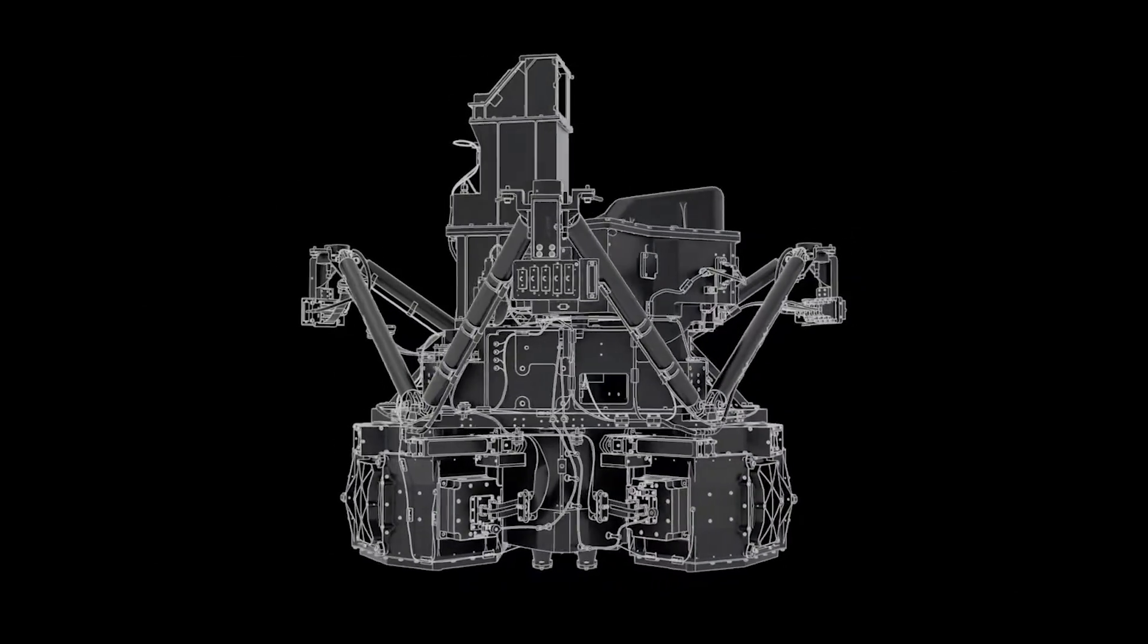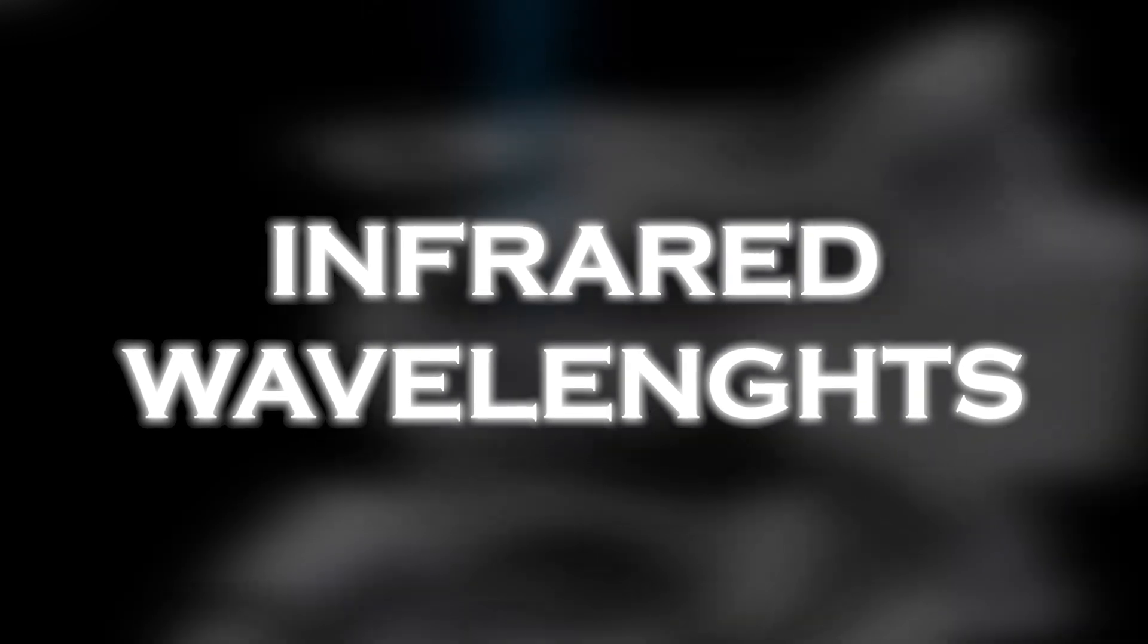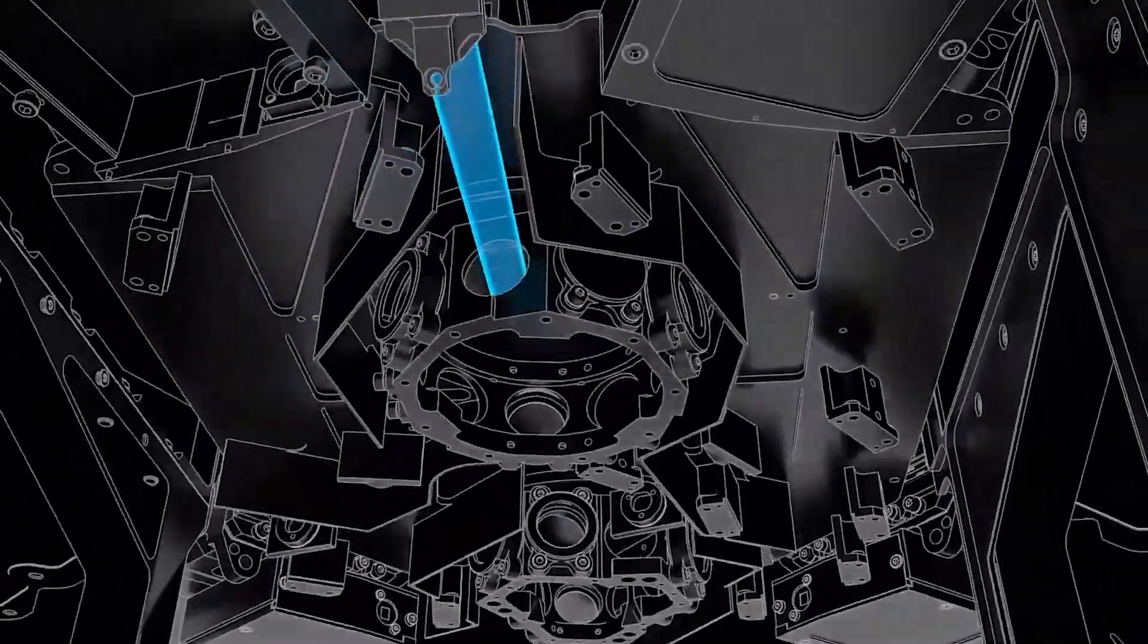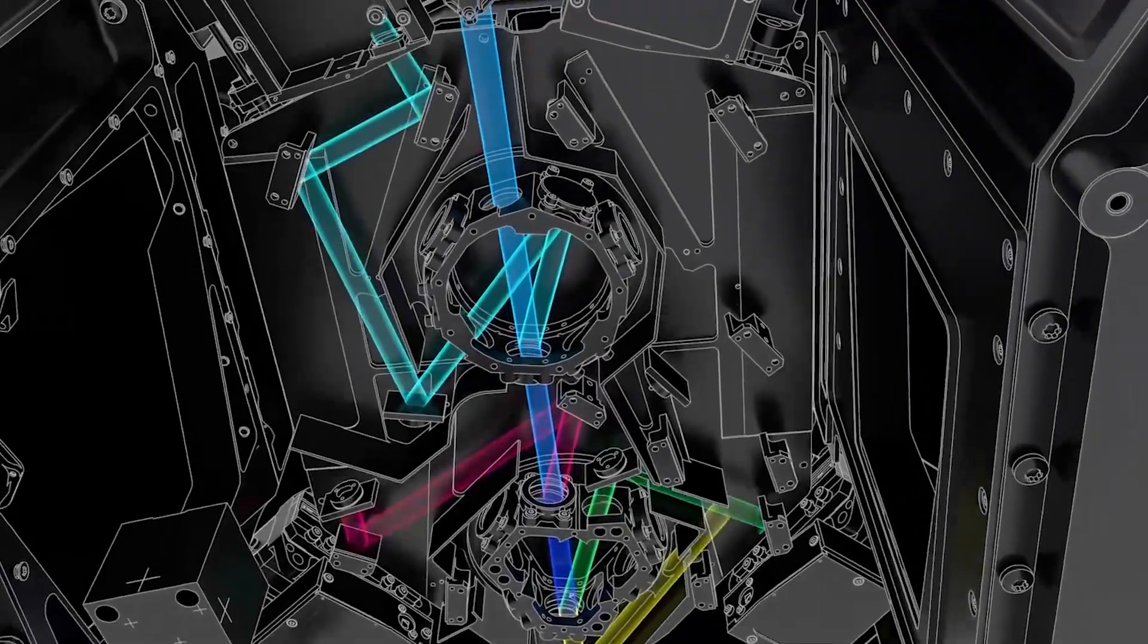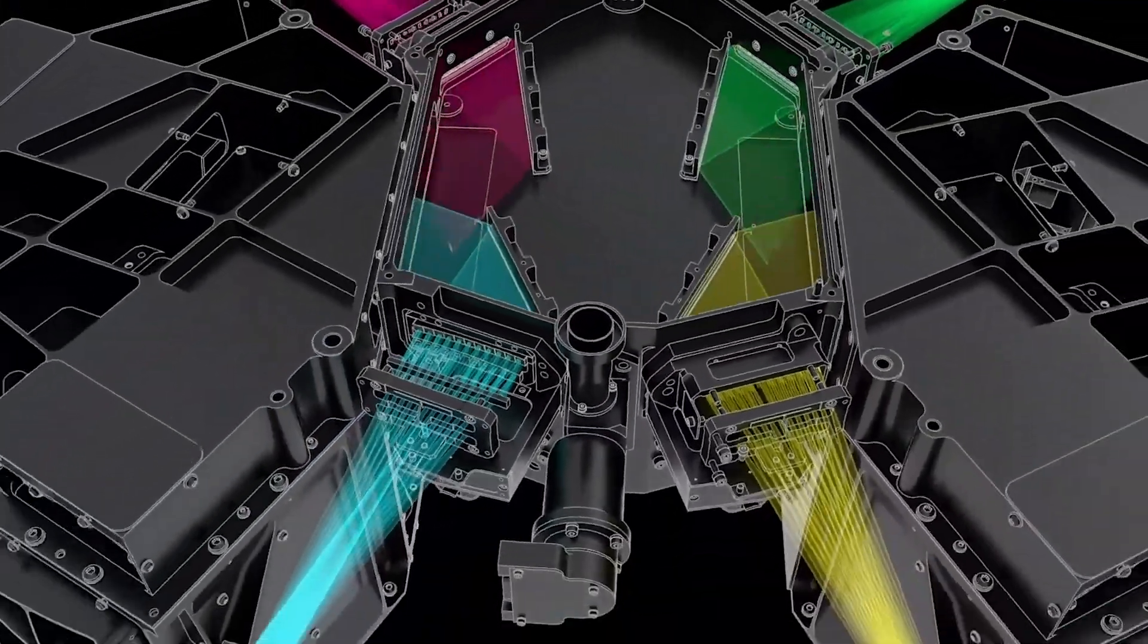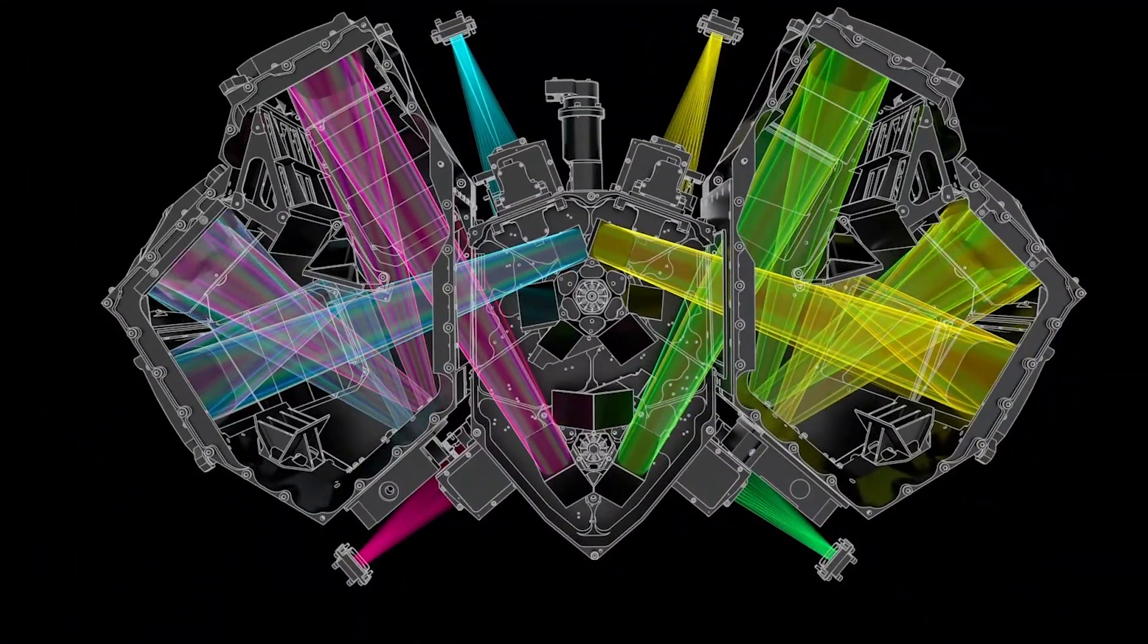This camera makes it possible to observe objects at infrared wavelengths, stretched due to the expansion of the universe, that are invisible to other telescopes because of their faintness and remoteness. The researchers discovered about a thousand exceptional bright and red objects in these NIRCam images.